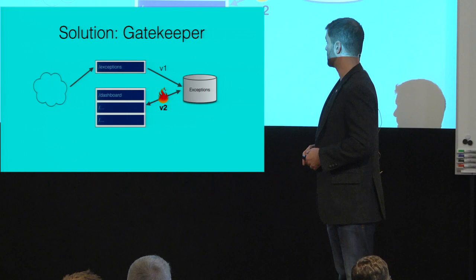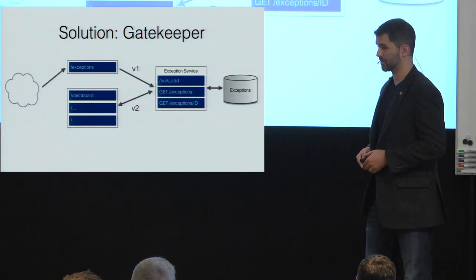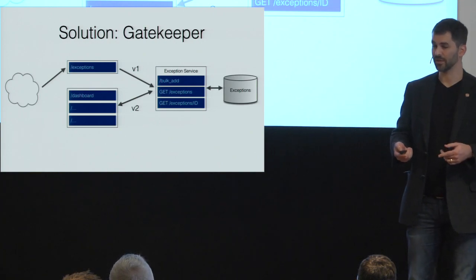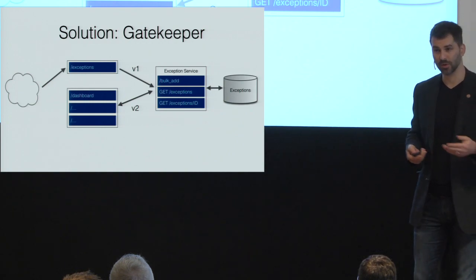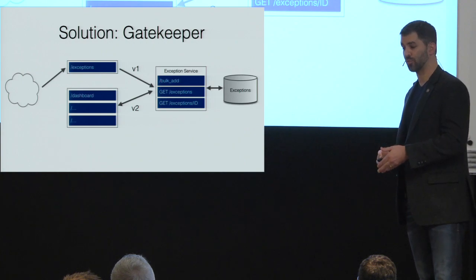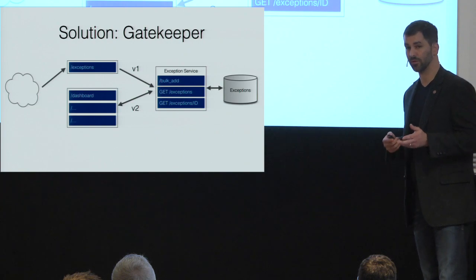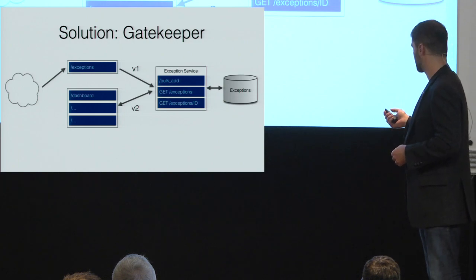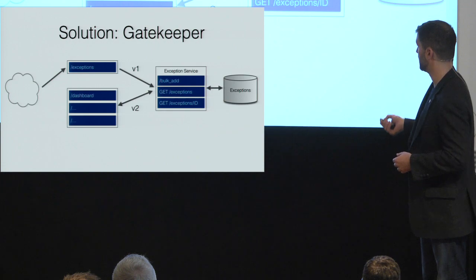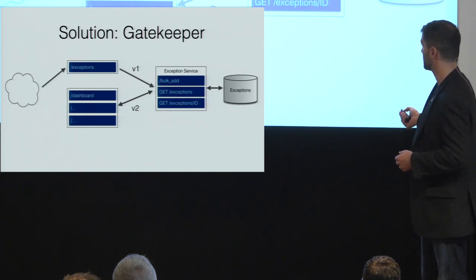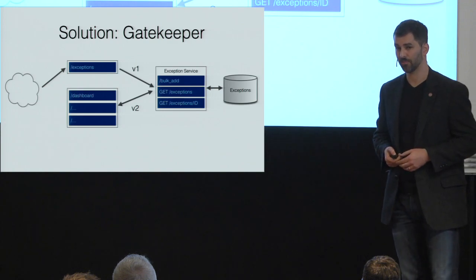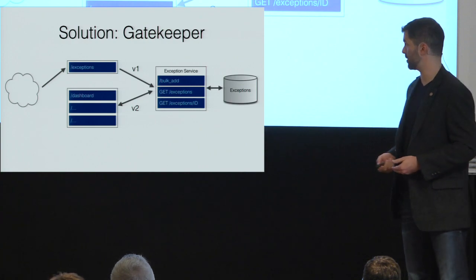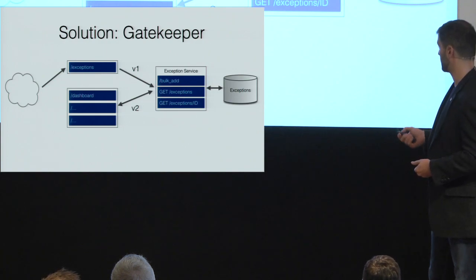The solution is what I call the gatekeeper pattern: no two services should be talking to the same database at any time. That's an ideal — there are situations where multiple services talk to the same database out of pragmatic need for high performance, but you're opening yourself up to that problem. So we put a back-end exception service in between the data store and the front-end applications. This service has a more simplified API that the other applications can agree upon, so you can iterate much more freely without destroying the database or killing one of the other applications.